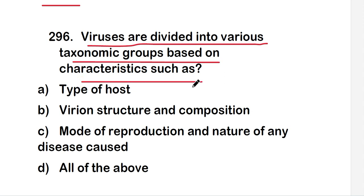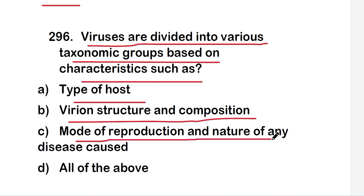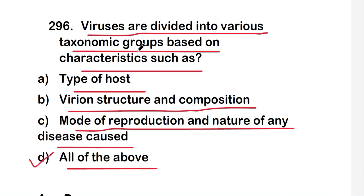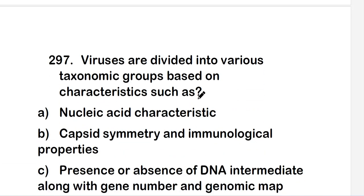Next question: viruses are divided into various taxonomic groups based on characteristics such as type of host, virion structure and composition, mode of reproduction, and nature of any disease caused — or all of the above? The right answer is option D, all of the above. Viruses are classified based on all these characteristics.